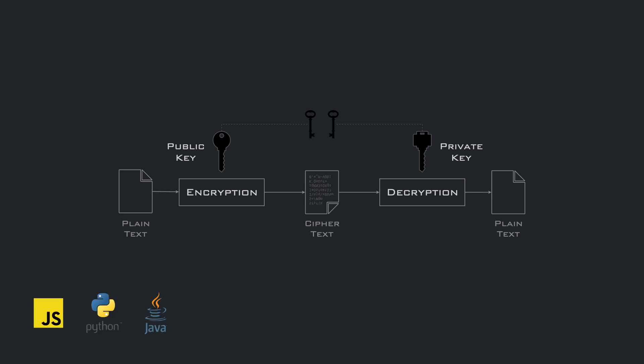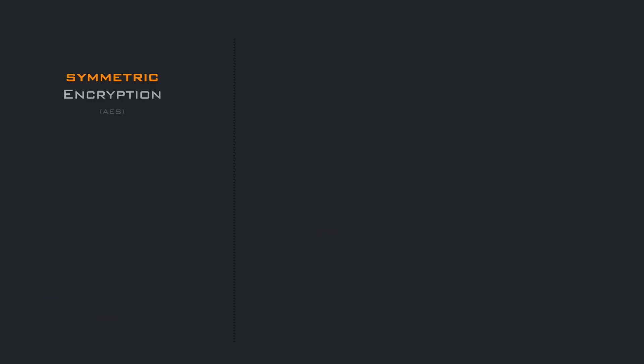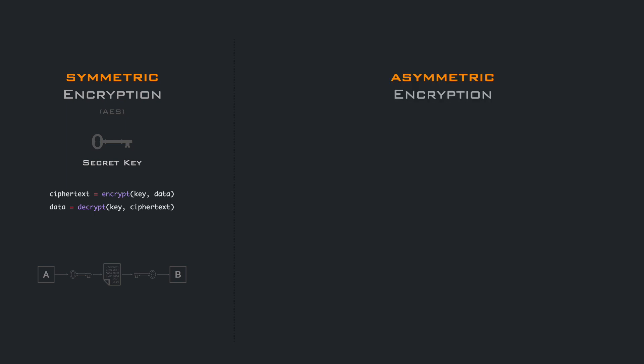But let's first see the difference between symmetric and asymmetric encryption. In symmetric encryption, you have a single key that is used to encrypt and decrypt the data. The main problem here is how to securely share the key between the sender and the recipient, since anyone that has the key can encrypt and decrypt messages. Asymmetric encryption uses two keys: a public key that can be openly shared, and a private key that must be kept a secret.